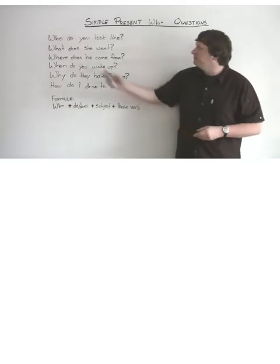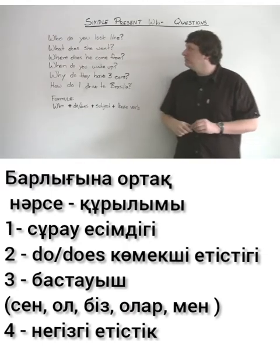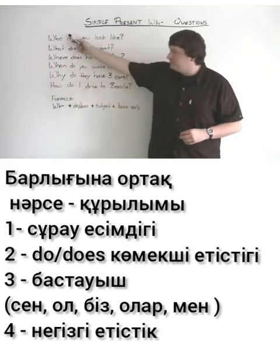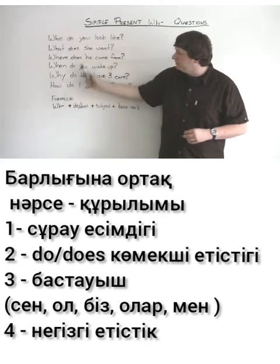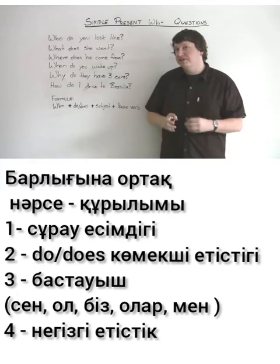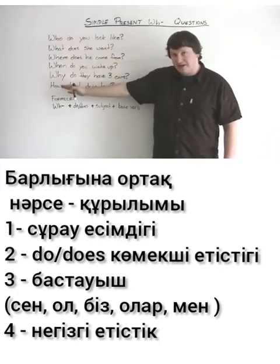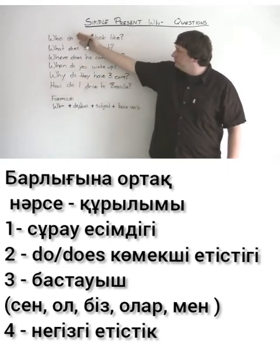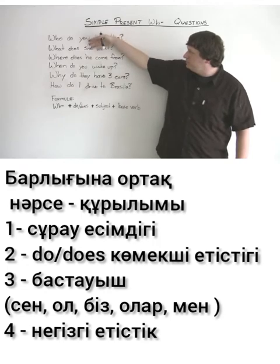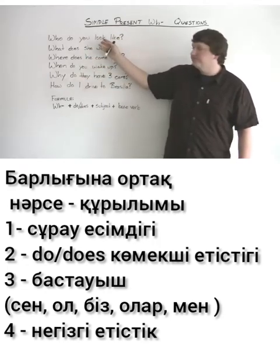Here we have 'Who do you look like?' Notice what is similar about all of these questions — they all have the same structure. You have your question word: who, what, where, when, why, how. You have the do verb: do or does. You have the subject: you, she, he, they, I.